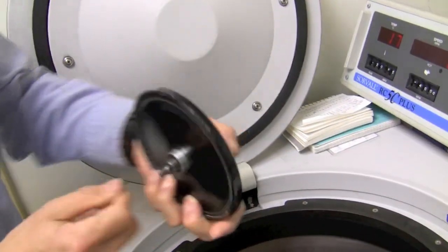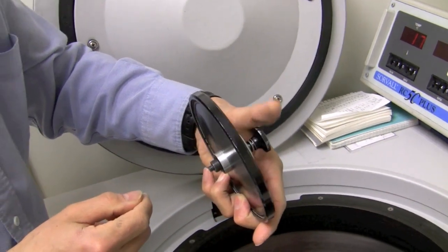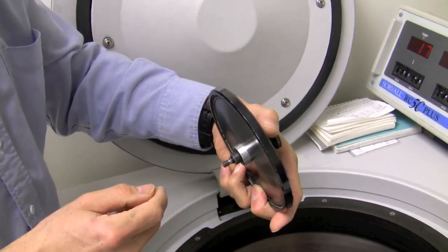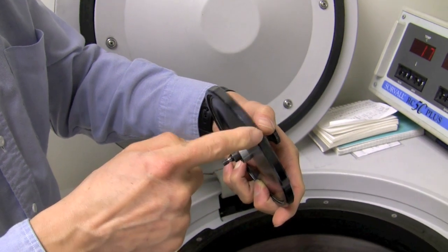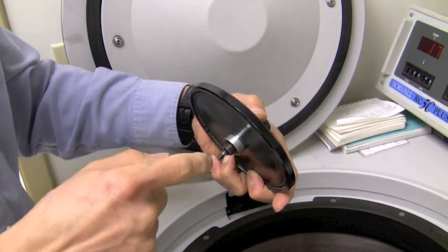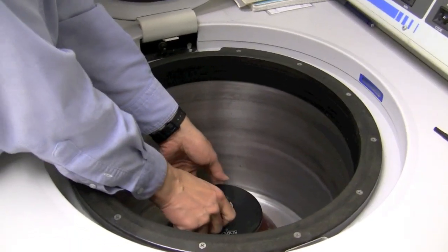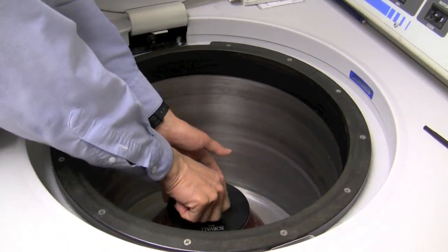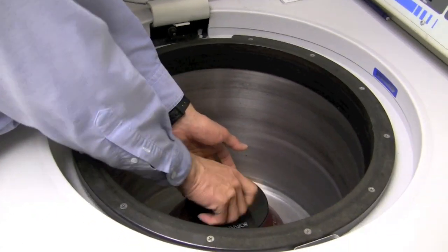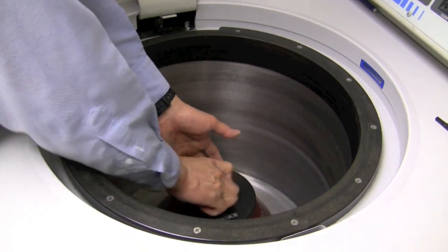There are two sets of knobs that I have to attach the lid to the rotor, as well as the rotor to the centrifuge. So first this is the silver outer ring, and I turn it counterclockwise until it's finger-tight.